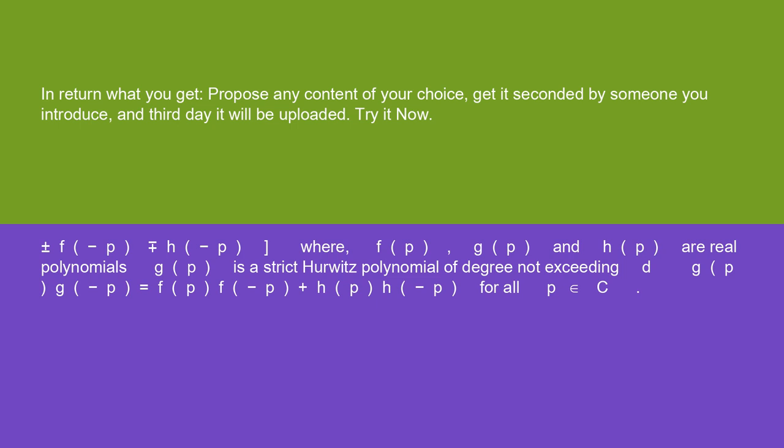g(p) is a strict Hurwitz polynomial of degree not exceeding d. g(p)g(-p) = f(p)f(-p) + h(p)h(-p) for all p ∈ C.